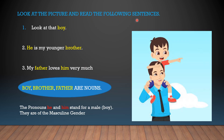Look at the picture and read: 'Look at that boy. He is my younger brother. My father loves him very much.' Here boy, brother and father are nouns — names of persons — and the pronouns are he and him, which stand for male. So boy, brother, father, he and him all stand for male. So it is called to be masculine gender.